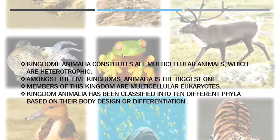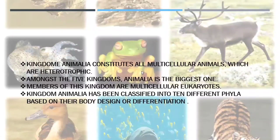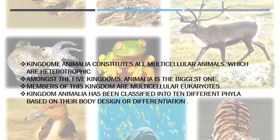Kingdom Animalia constitutes all multicellular animals which are heterotrophic. These animals are heterotrophic because they don't contain chlorophyll. Among the five kingdoms, Animalia is the biggest one. Members of this kingdom are multicellular eukaryotes. Prokaryotes are situated in Monera. Kingdom Animalia has been classified into 10 different phyla based on body design or differentiation.